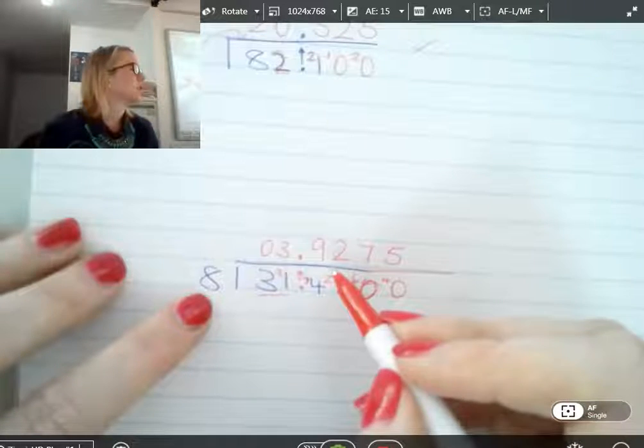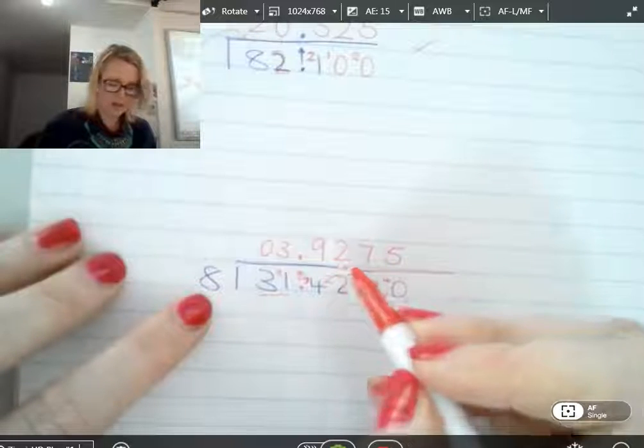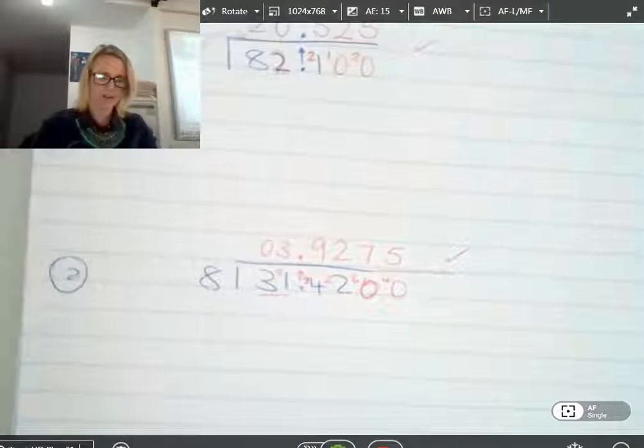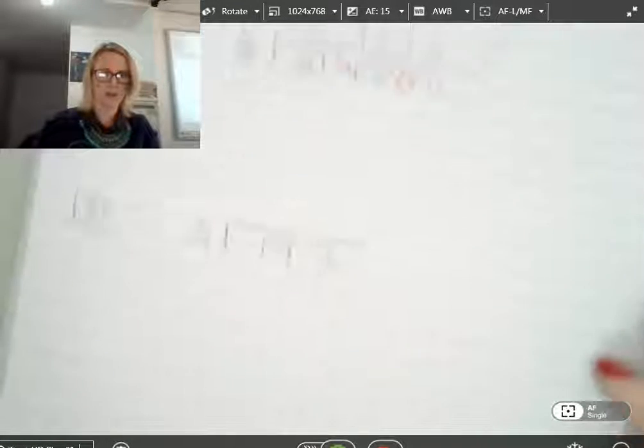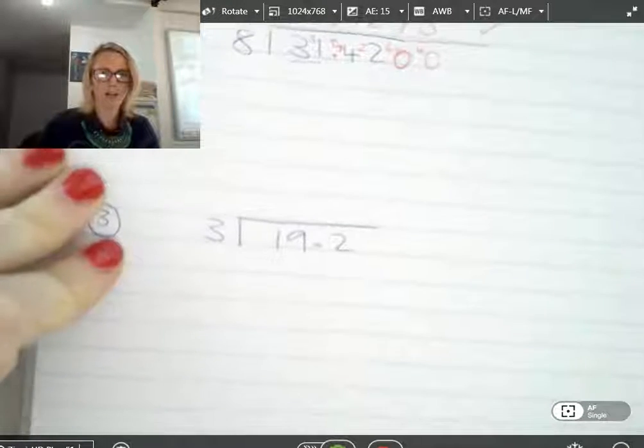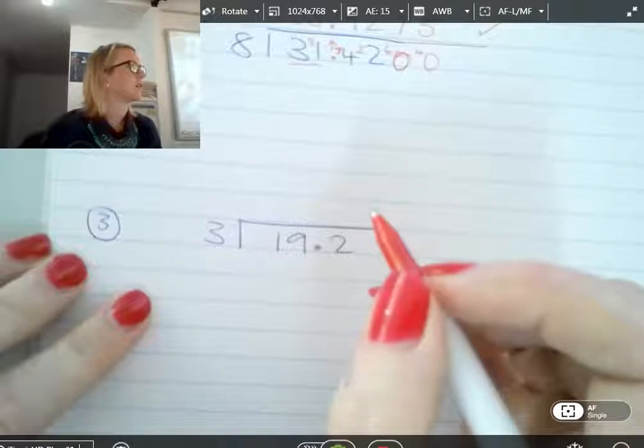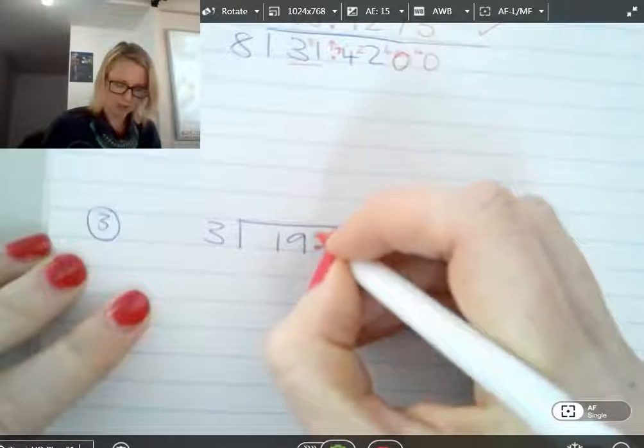So we said that our answer should be close to 4. And 3.9275 is very close. That's fantastic. So last example. All right. We'll do it together. What do I do first? Decimal top.